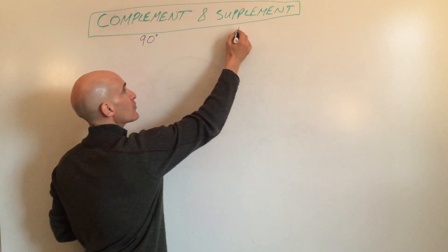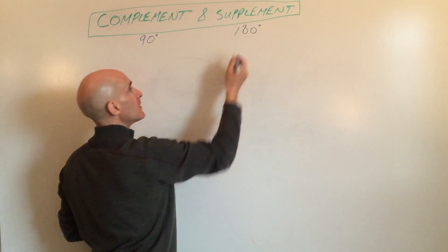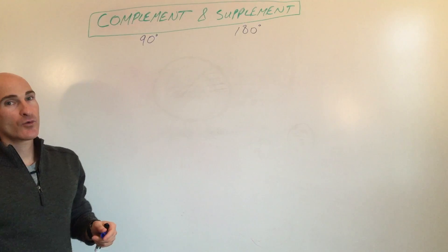They add up to 90. Supplementary means they add up to 180. But in pre-calculus, we do a lot of our work in radians.